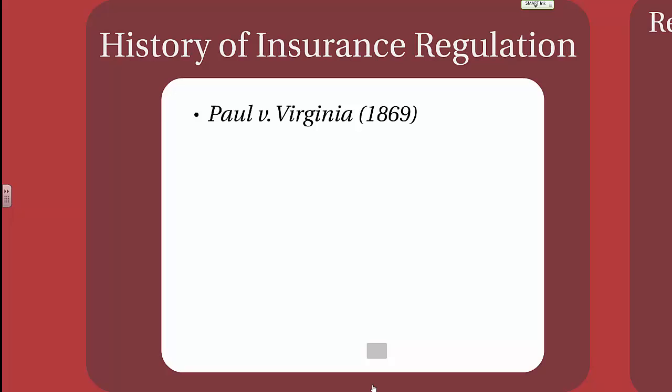Samuel Paul was an insurance agent operating in the state of Virginia, but Samuel Paul was licensed in New York and selling from a New York insurance company. Virginia said that Paul should obtain a license to sell in Virginia and only sell from a Virginia company. Paul argued that insurance should operate across state lines and was interstate commerce, and therefore he should not have to purchase a license in Virginia or sell from a Virginia company. The U.S. Supreme Court disagreed with Paul's argument, which meant that Paul had to secure a license in Virginia.